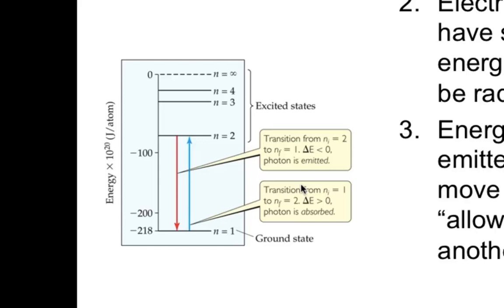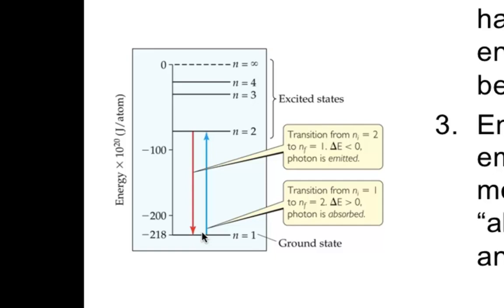For example, one electron in the ground level n=1 requires a specific amount of energy to absorb in order to reach n=2. To reach n=3 it must absorb a different, larger amount of energy. The electron can only jump to a level if it has exactly the right energy. Conversely, going from orbit 2 back to orbit 1 requires releasing that same amount of energy. Going from orbit 4 to orbit 2 means releasing the energy corresponding to that specific transition.